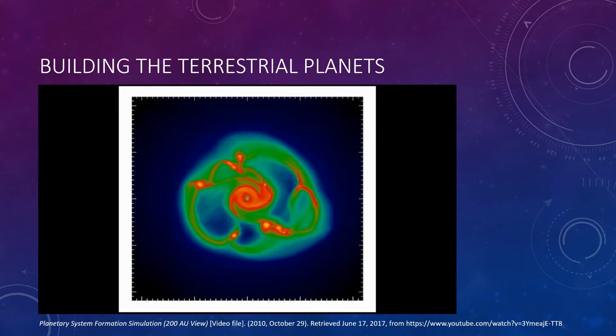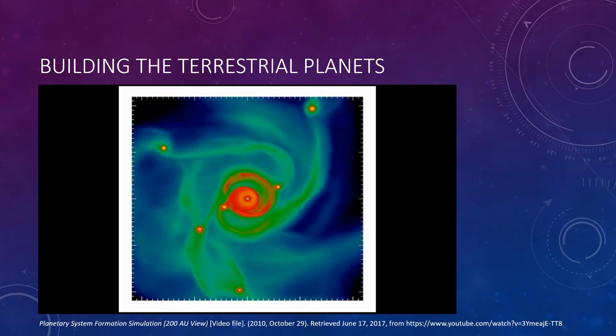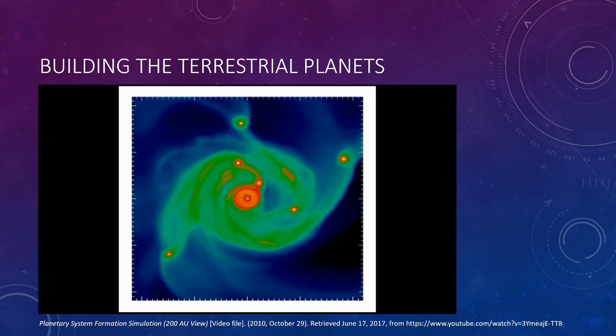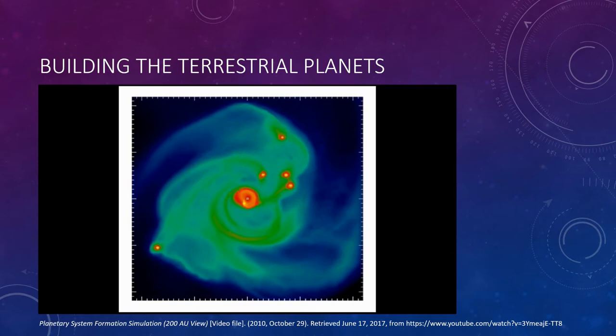You can see planetesimals forming—those reddish and orange balls orbiting the center. Some of those may collide with one another, and these could eventually become the planets of a solar system, as made in this simulation. This gives a quick glance at how the process works.